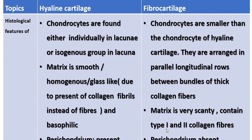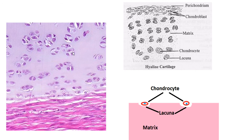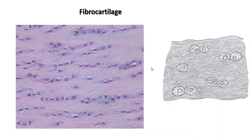The matrix of fibrocartilage is very scanty and contains type 1 and type 2 collagen fibers. In hyaline cartilage, the matrix is homogeneous and bluish. The lacunae are depressed areas within the matrix containing chondrocytes. In fibrocartilage, chondrocytes are arranged in parallel rows, with collagen fibers also running in parallel — alternating layers of chondrocytes and collagen fibers of the same staining color.